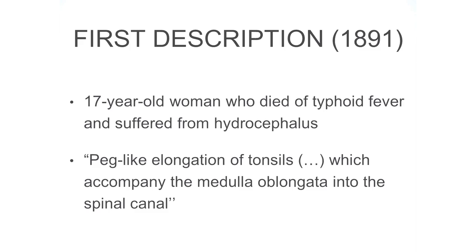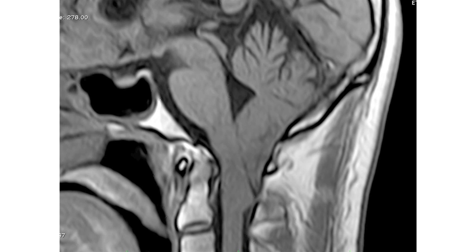It was a 17-year-old woman who did not have, in retrospect, Chiari Malformation, but was having hydrocephalus, and the hydrocephalus was pushing the tonsils outside of the border of the skull. So the ironic part is that the first case of Chiari was not a Chiari Malformation after all. He describes the elongation of the tonsils, which is speck-like, with a picture very similar to something like this.